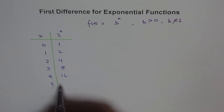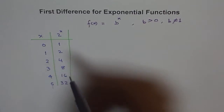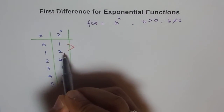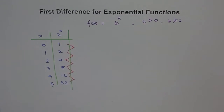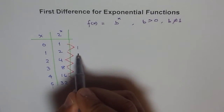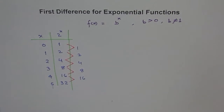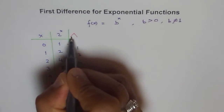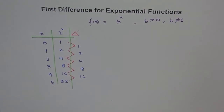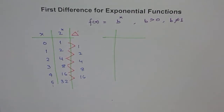Continuing to x = 5: 16×2 = 32. Now finding the first difference — the difference between consecutive terms: 2−1 = 1, 4−2 = 2, 8−4 = 4, 16−8 = 8, 32−16 = 16. Do you observe something in this first difference? Now let's take another example with 3^x, writing values for x = 0, 1, 2, 3, 4.